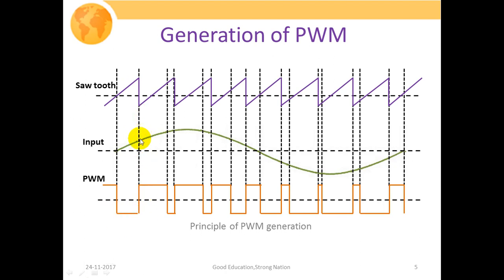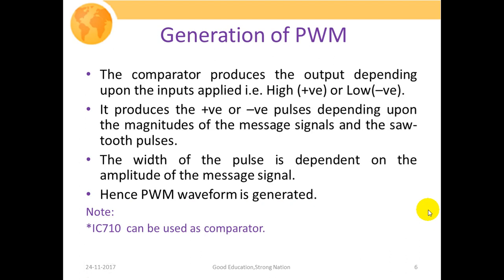When the amplitude of the message signal exceeds the amplitude of the sawtooth waveform, the comparator generates a positive pulse. So the comparator output is a positive pulse when the message signal is greater than the amplitude of the carrier pulse, and a negative pulse otherwise. This generates a varied pulsating signal whose pulse width is dependent upon the strength of the message signal, hence generating our pulse width modulated waveform.